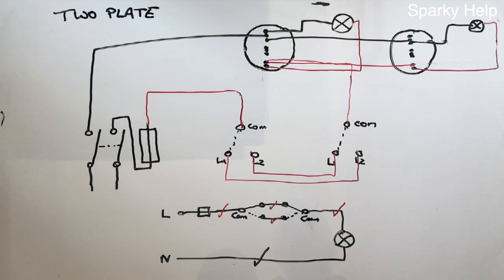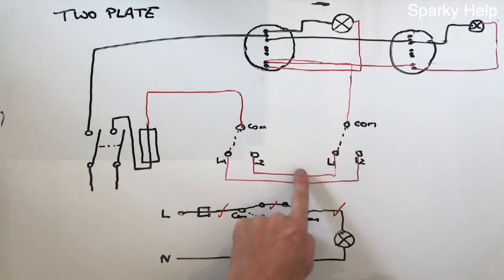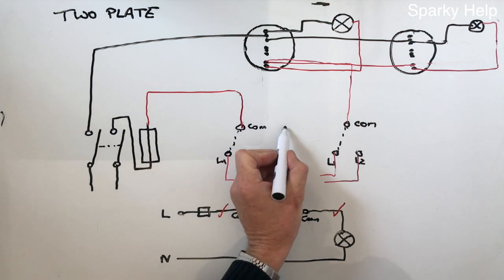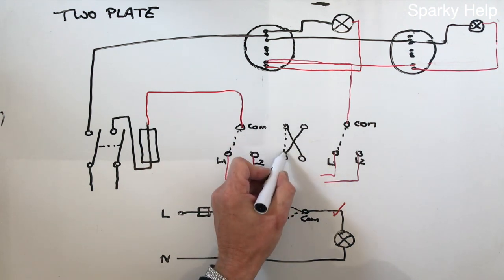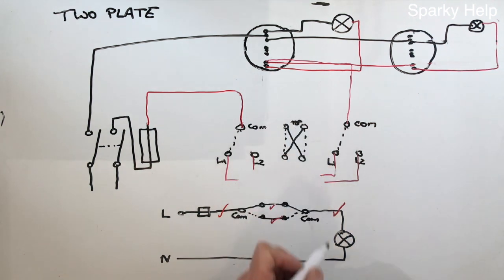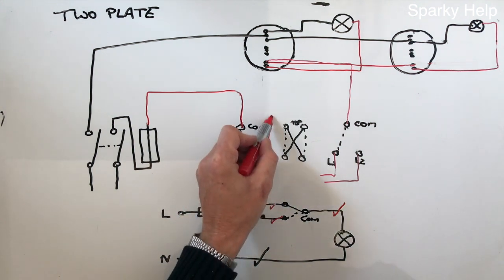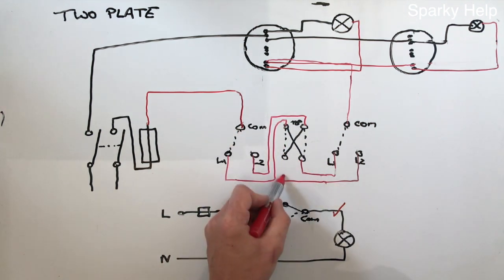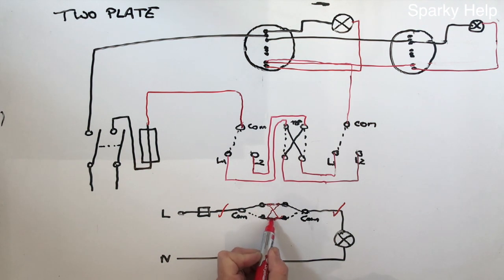Now we're going to add an intermediate switch to the two-plate two-way system. Remember: intermediate switches go in the strappers. We take the strappers out of their current location, buy an intermediate switch — which has four connections — and wire it in. A pair of strappers goes into the top of the intermediate switch and a pair comes out of the bottom. In the circuit diagram, the intermediate switch goes in between, and remember all these switches are drawn on their sides.